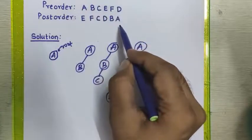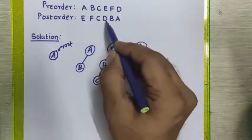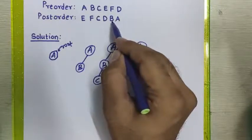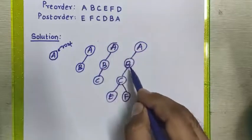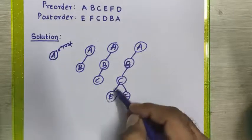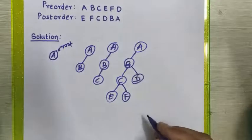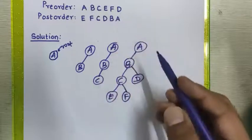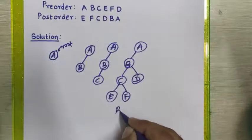We pick the next element from pre-order: node D. Checking the post-order sequence, node D appears immediately before node B and before node A, meaning it is part of node B and must be placed below it. In the diagram, the left part of node B is already occupied, so node D must be placed to the right side of node B. This is the last node from the pre-order sequence, so all nodes have been placed and the binary tree is complete.